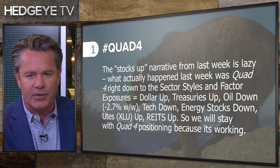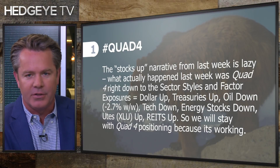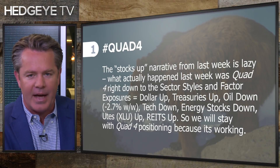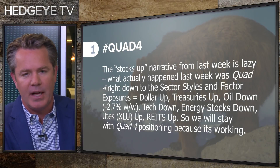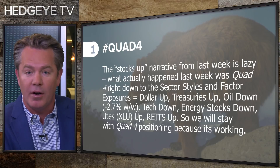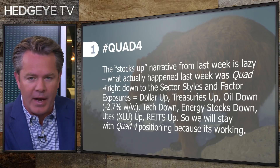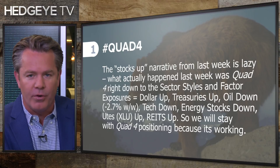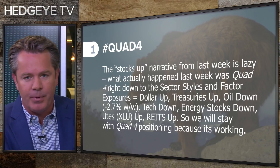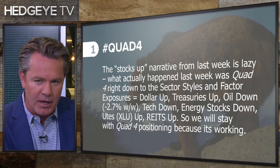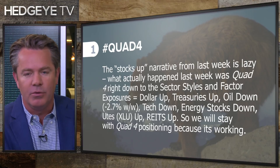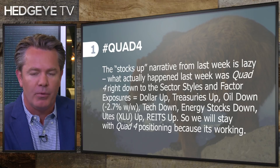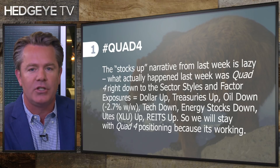If you're just looking at the surface area of the market or just the headline of the Dow, bro, you missed last week. Last week was a quad four week. What happens in quad four? The dollar goes up, Treasury bonds go up, bond yields go down, utilities up, REITs up, tech and energy down.